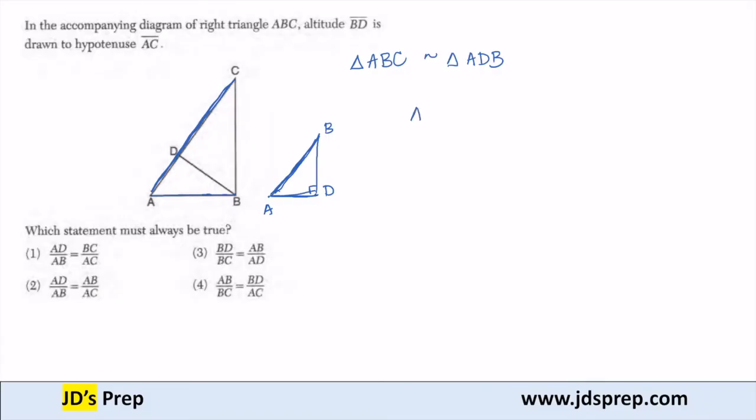So AC to AB, our bigger triangle, has to be proportionate to our hypotenuse AB to AD on our smaller triangle. And let's see if any of these proportions are here.